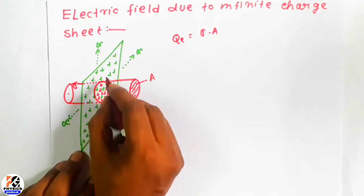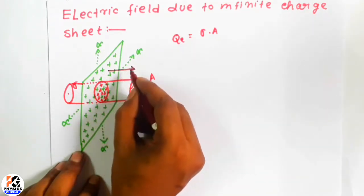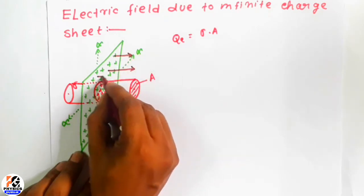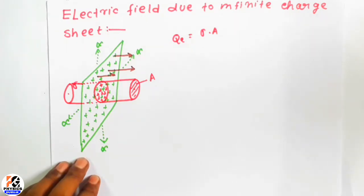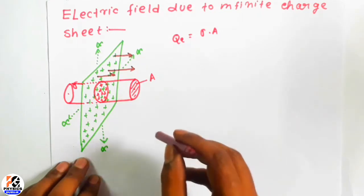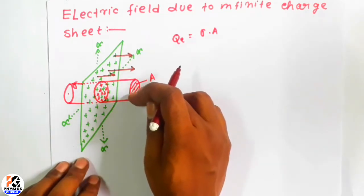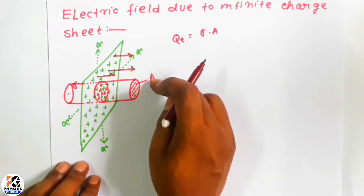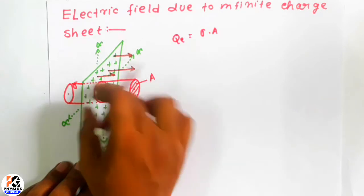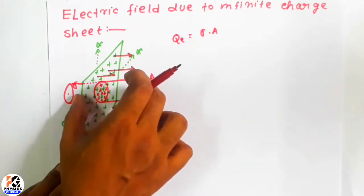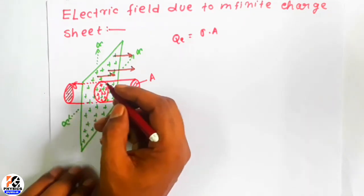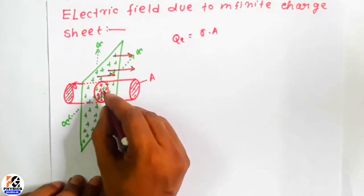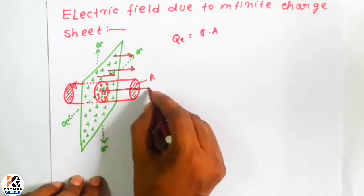Now let's see why I have taken this type of surface. As the plane sheet has infinite extension, the electric field in front of the plane sheet will be in this direction — that is, perpendicular to the plane. So I have to integrate the electric field over all surfaces. There are three surfaces: one is this circular disk of area A, another is the curved surface, and the third is the surface in the opposite direction.